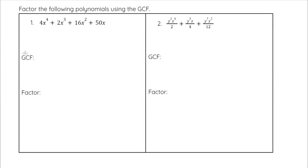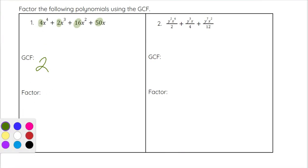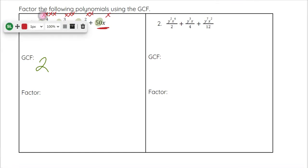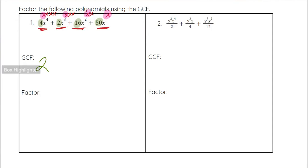For this example, I want to find the GCF of four terms. Looking at the coefficients: 4, 2, 16, and 50 — all even, so we can divide by at least 2. Because one of them is 2, that's the highest we can go. This time each term also has an x in it: x to the fourth, x to the third, x squared, and x. The lowest power is x to the first, so our GCF is 2x.